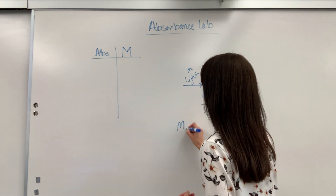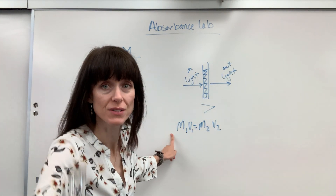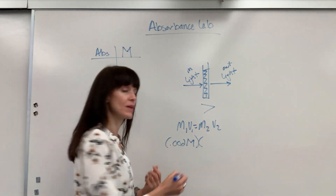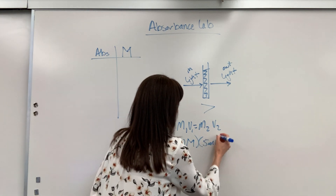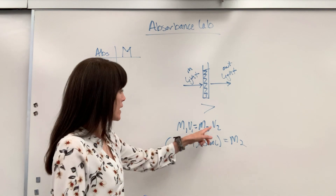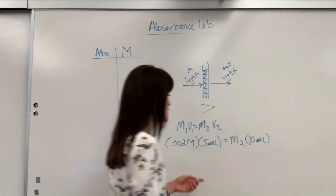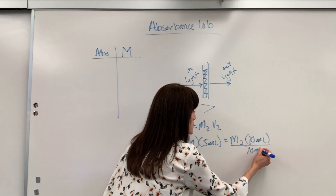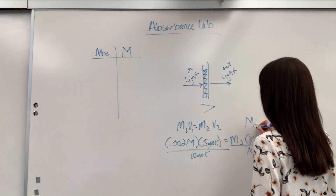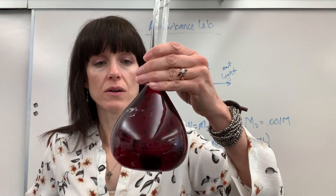Let me do a quick review on dilutions. The formula is M1V1 = M2V2. So M1, the initial concentration, is 0.002 molar, and the volume used is 5 mils. The final volume is 10 mils. Solving for M2 — divide both sides by 10 mils, the mils cancel — and you get a molarity of 0.001 molar. That solution will look lighter than the stock.